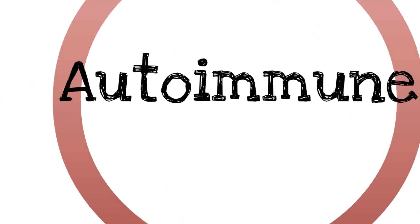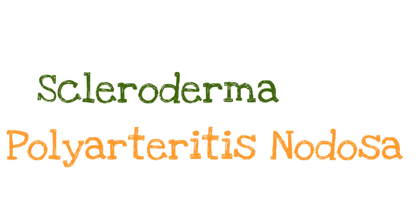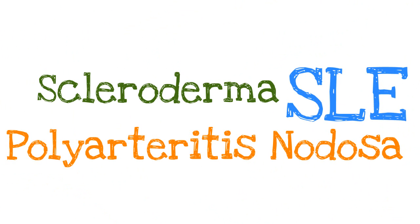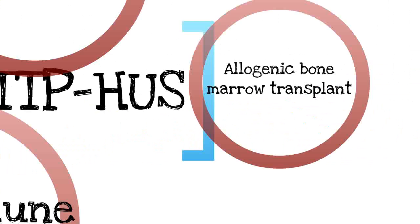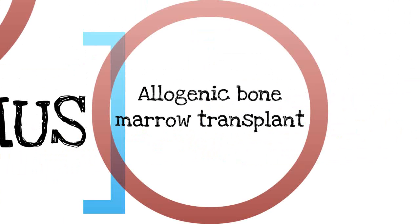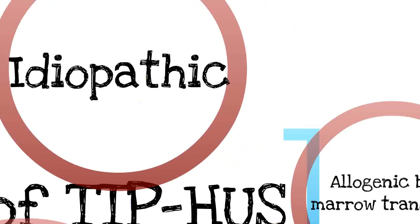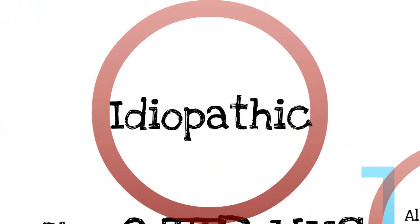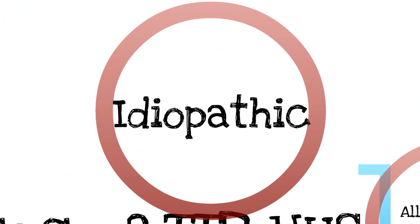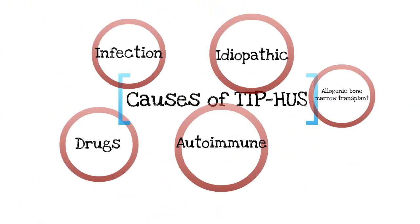There are also autoimmune causes as well. The autoimmune causes include scleroderma, polyarteritis nodosa, as well as SLE, otherwise known as lupus, and these can also lead to TTP and HUS. Bone marrow transplant can lead to TTP and HUS as well, but sometimes it's difficult to exclude infection versus TTP-HUS in those cases. It can also be idiopathic, meaning we don't know why TTP-HUS occurs in certain patients.